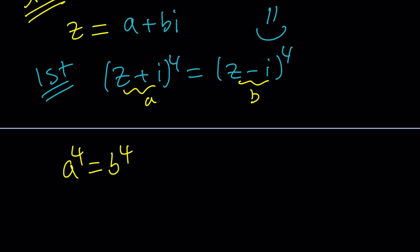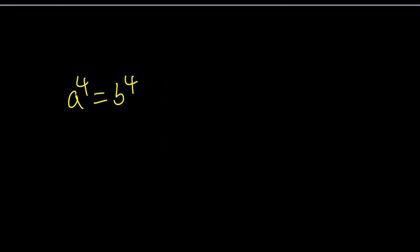In the real world, you would just square root both sides and you would get two results. A squared equals B squared and A squared equals negative B squared. But in the complex world, things are different. Things are more complex. So let's see how that works.